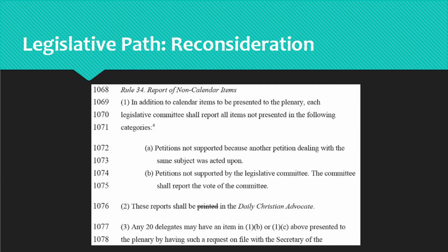If you want to have an unsupported petition reconsidered, get 20 delegates to sign a request and submit it to the Secretary of the General Conference by 3 o'clock on the day that the item appears in the DCA. If the petition does come up for debate, one of the signers must be prepared to speak for it because the legislative committee did not support it. However, there is no requirement that General Conference take action on items that were not supported in legislative committee. Getting the petition presented in plenary depends on the Committee on Agenda and Calendar deciding where to list it and on the plenary body moving efficiently through all its business before adjourning.